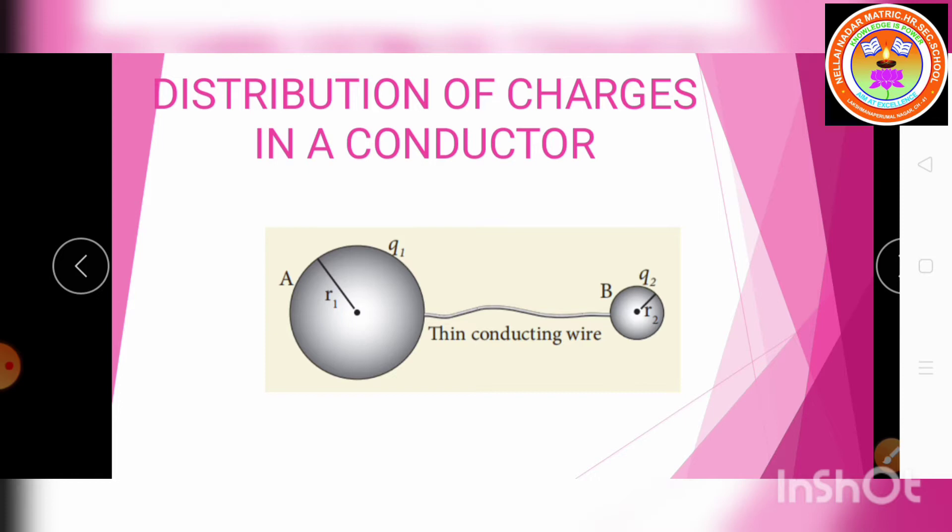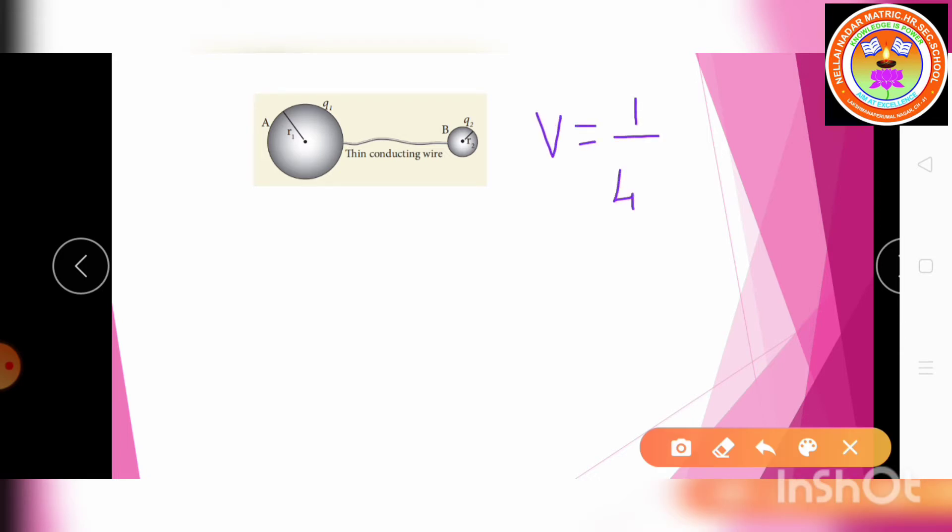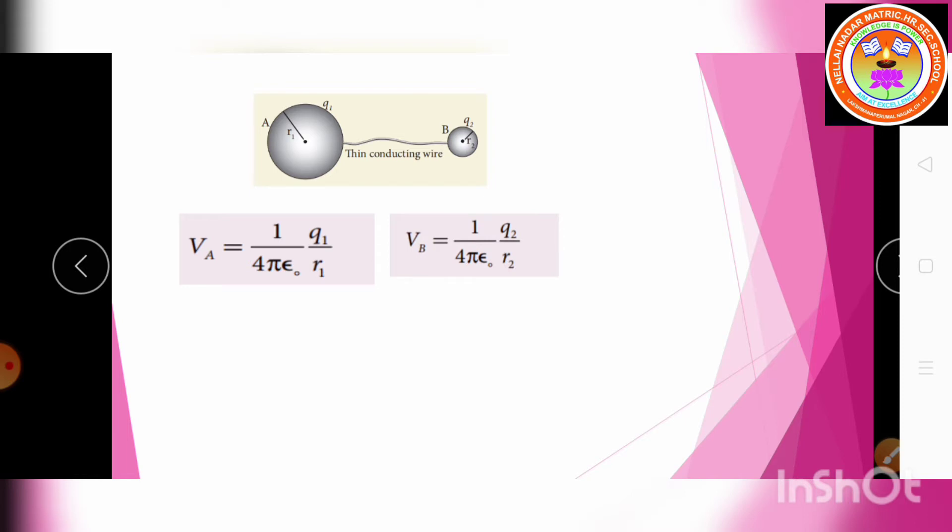The electrostatic potential at the surface of sphere A is: VA = 1/(4πε₀) · Q1/R1. Similarly, the electrostatic potential at the surface of sphere B is: VB = 1/(4πε₀) · Q2/R2.